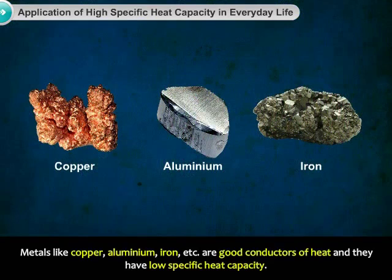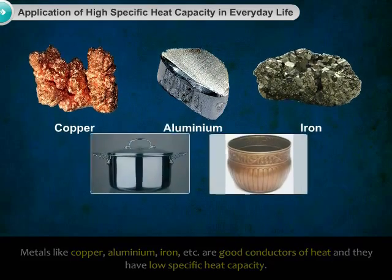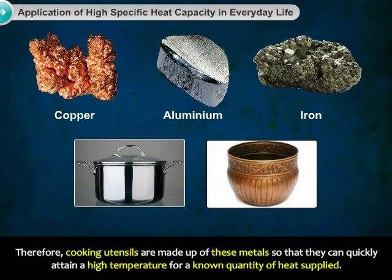Metals like copper, aluminium, iron, etc. are good conductors of heat, and they have low specific heat capacity. Therefore, cooking utensils are made up of these metals, so that they can quickly attain a high temperature for a known quantity of heat supplied.